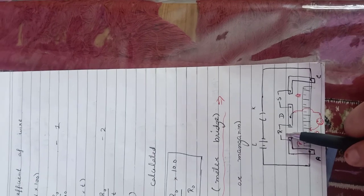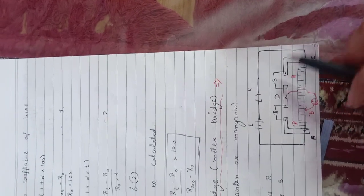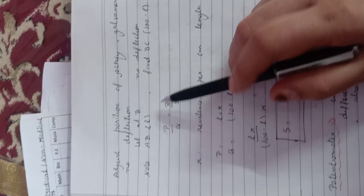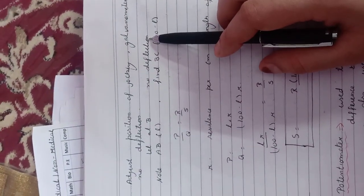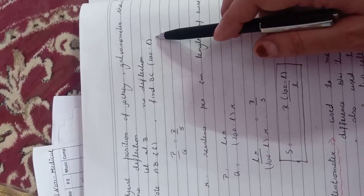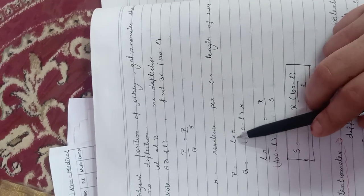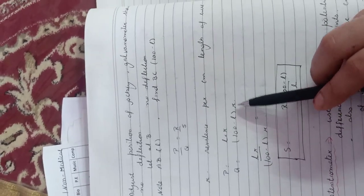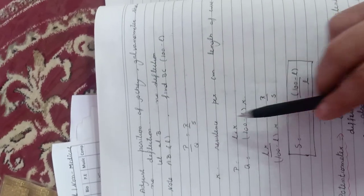R is my known resistance and S is the unknown resistance I need to find. The same concept applies: P upon Q equals R upon S. Since resistance per centimeter length is small r, the resistance of length L is L×r, and of length (100-L) is (100-L)×r. Using the balancing equation, the unknown resistance S equals R into (100-L) upon L.